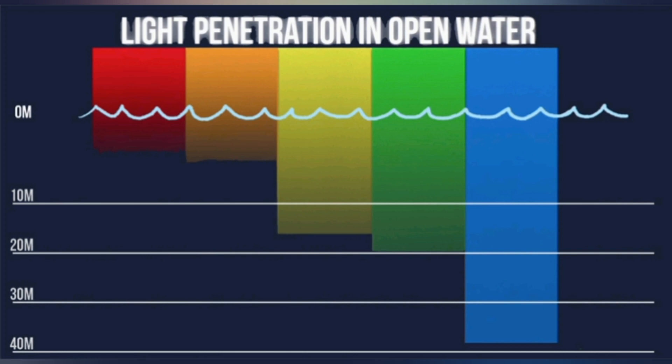When light hits water, the water molecules absorb some of the photons from the light. Everything absorbs at different wavelengths — your green t-shirt absorbs red, and as a result reflects the remaining color back at the viewer.